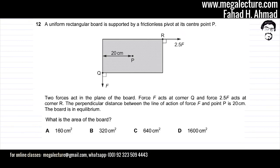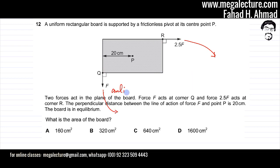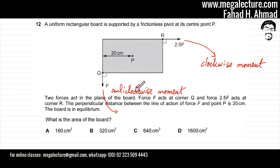Looking at force F, it is trying to rotate the board in a clockwise direction, while the 2.5F force and the F force at point Q are trying to rotate the board in an anti-clockwise fashion. So this is the anti-clockwise moment. I can put a value on it: it's the force multiplied by the perpendicular distance from the pivot, which is 20 centimeters multiplied by F.